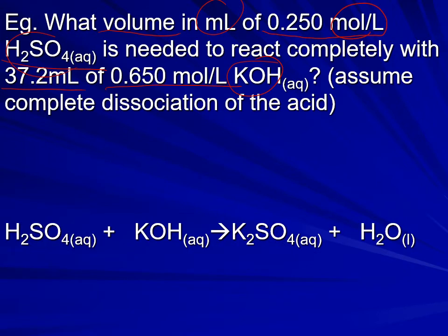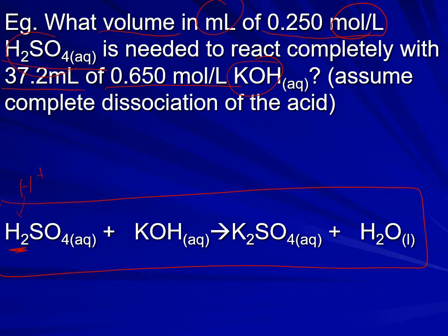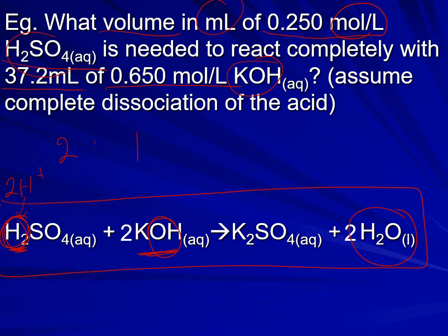As with any stoichiometry question, you must start with a balanced chemical equation. In this case we're dealing with sulfuric acid, which is diprotic — meaning it has two hydrogen ions. We assume both hydrogen ions are released when reacting with a strong base, giving a 2:1 ratio of hydrogen ions to hydroxide ions. This means you need twice as many moles of potassium hydroxide as sulfuric acid, so make sure your equation is balanced before proceeding.